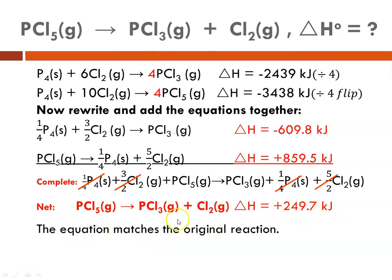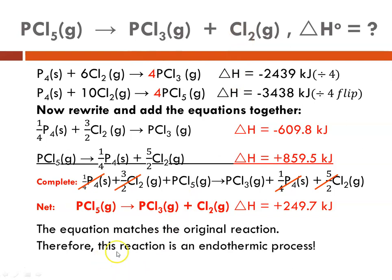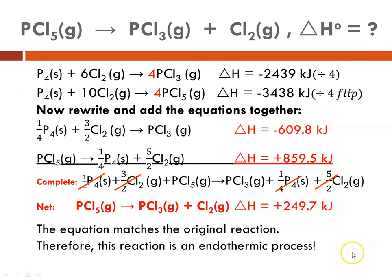The equation matches the original equation — if you look at the result and the one at the top, they match. Since the delta H is positive, this is an endothermic process. These calculations are not difficult to do — they're a little tedious and you have to be meticulous, but in the end you can come up with the correct delta H. This is Ms. Augustine signing off.